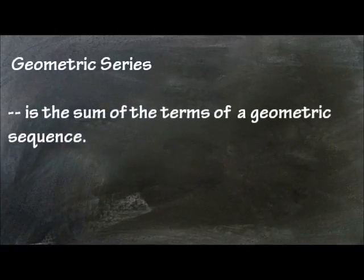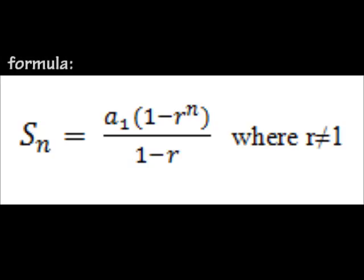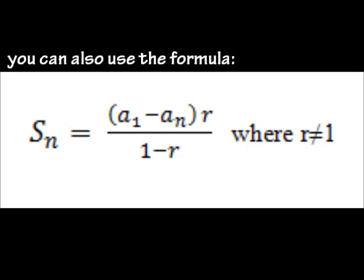Geometric series is the sum of the terms of a geometric sequence, representing it in a formula. S sub n equals a sub 1 times quantity 1 minus r raised to n, all over 1 minus r, where r is not equal to 1. We can also use the formula S sub n equals a sub 1 minus a sub n times r, all over 1 minus r, where r is not equal to 1.